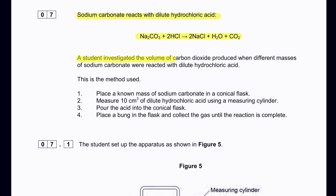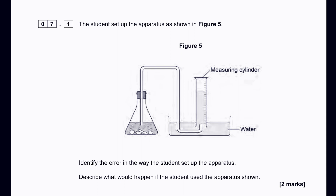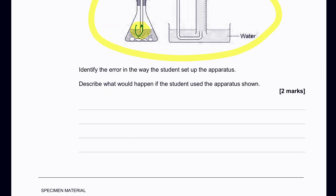A student investigated the volume of carbon dioxide produced when different masses of sodium carbonate were reacted with hydrofluoric acid. The method: place a known mass of sodium carbonate in a conical flask, measure 10 cm³ of hydrofluoric acid using a measuring cylinder, pour the acid in, place a bung in the flask, and collect gas until the reaction is complete. However, the diagram has a mistake — the delivery tube is already inserted into the liquid.